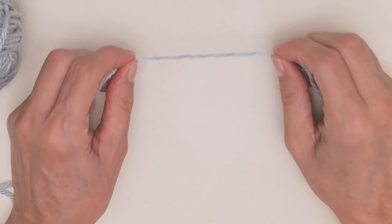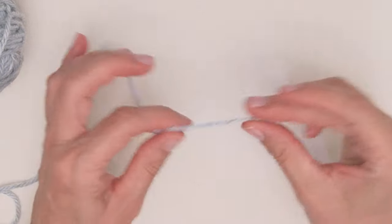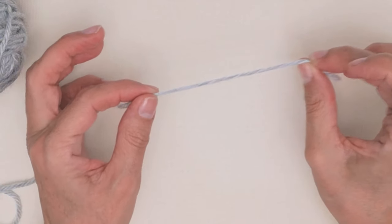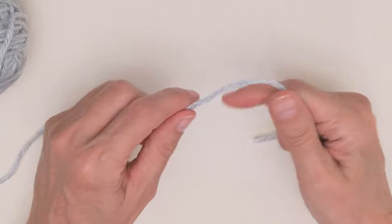Now I'm going to show you one very simple way to hold your yarn when you're crocheting. Take that short end of yarn and hold it in your dominant hand.